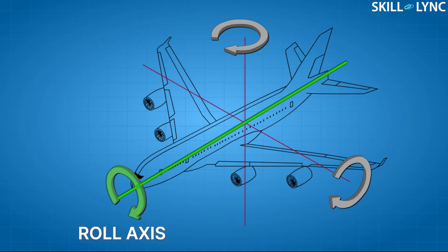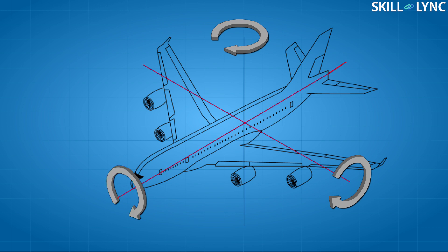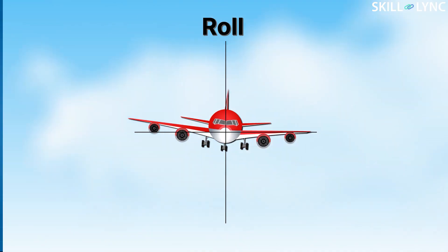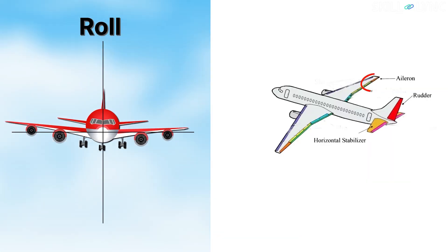The second control axis is the roll axis. It lies through the center of gravity of the aircraft and is directed in the forward direction, parallel to the fuselage. Motion of the aeroplane about this axis is called the roll, and this movement is controlled by the aileron on the wing.